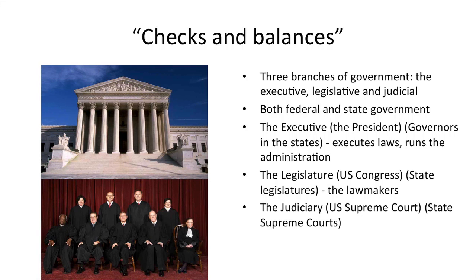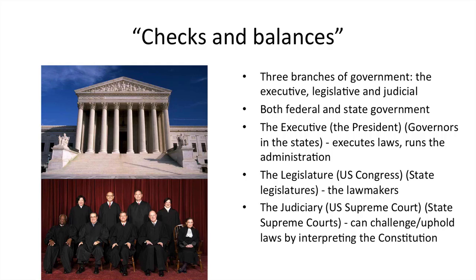The judiciary — the judicial branch of government — on the federal level is the U.S. Supreme Court, and all the other states have their own state Supreme Courts. This is the U.S. Supreme Court building in Washington, D.C., and its nine Supreme Court justices. The judiciary can challenge or uphold laws by interpreting the Constitution. They are the final interpreters of the Constitution, the U.S. Supreme Court at least.